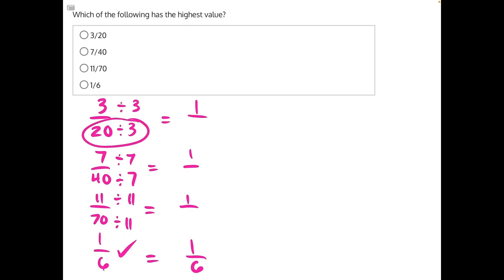So let's start with 20 divided by 3. 3 cannot go into 2, but 3 can go into 20 six times. That's 18. We subtract, we're left with 2. Then 3 cannot go into 2, so we have to add a decimal and add a 0, and we can see that this is going to become a repeating process. So it's going to be 6.666 repeating.